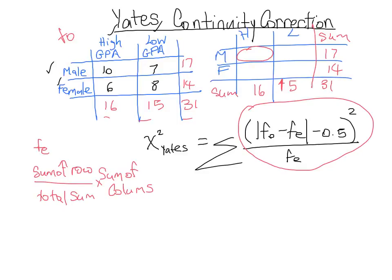In order to fill in this value, it's the sum of the row, which is 17, over the total sum, so the total sum right here is 31, times the sum of the column which is 16. And once you've done that you should get 8.77.